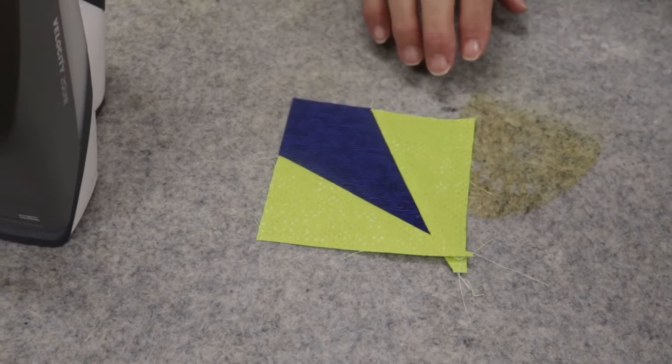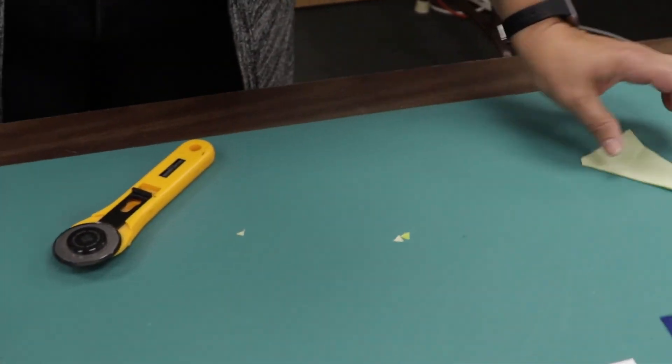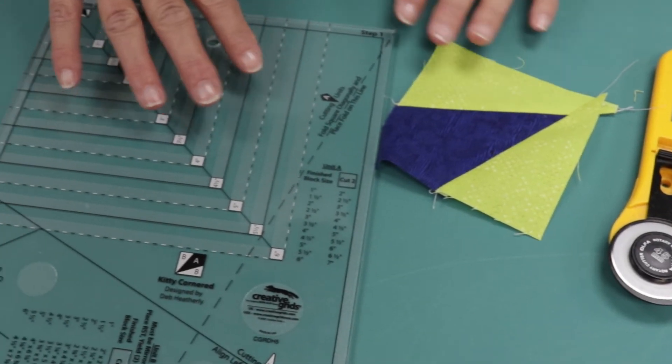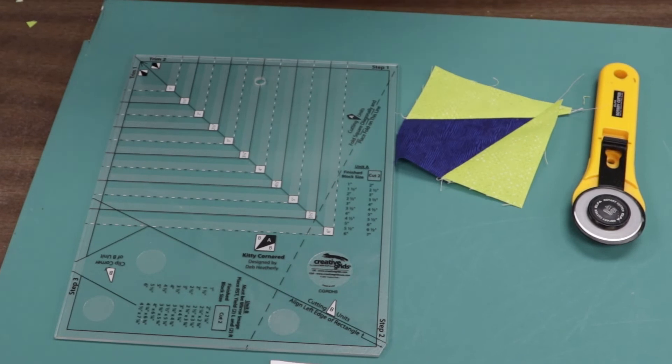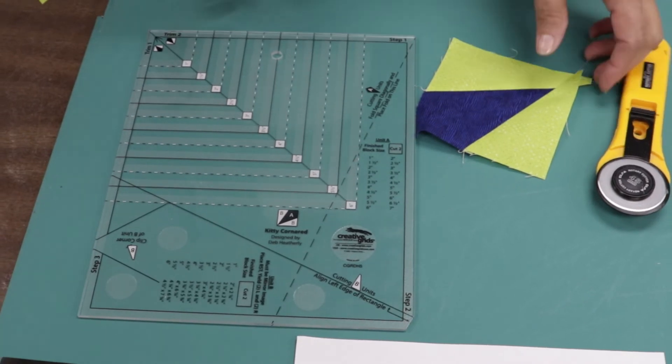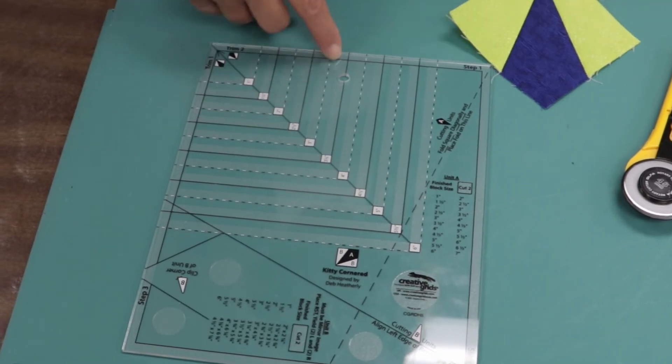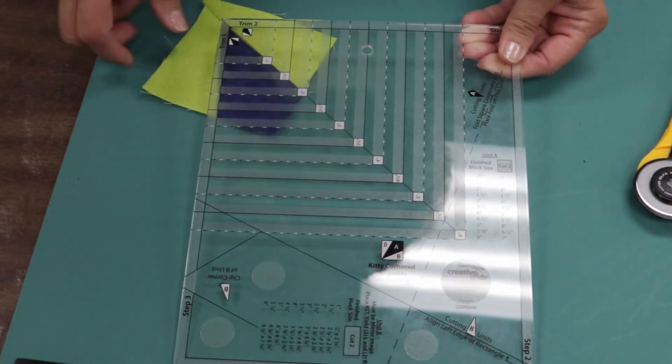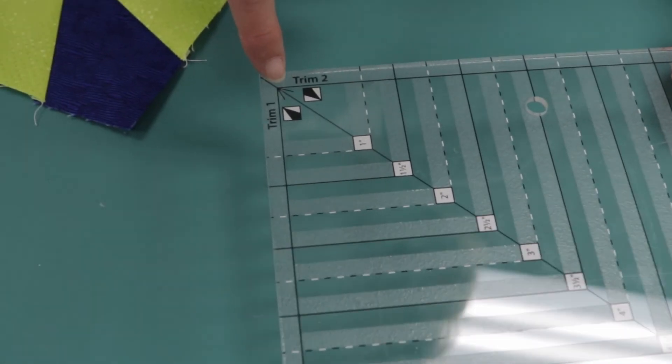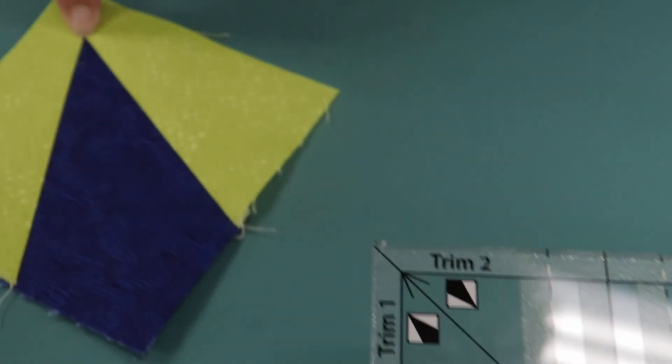So once you get all eight of these done, we're going to do one more thing with our ruler to get these down to our three and a half unfinished size. The great thing about this ruler is all of the measurements are based on the finished size of your square of your unit. So we are making three-inch finished. So what we're going to do is we're going to trim based on the three-inch markings. So first thing we want to do is line up, take our little trim point right here. I don't know if you can see, there's like a little arrow right here.